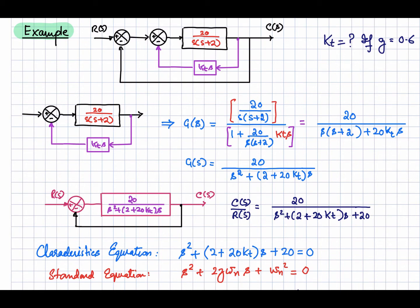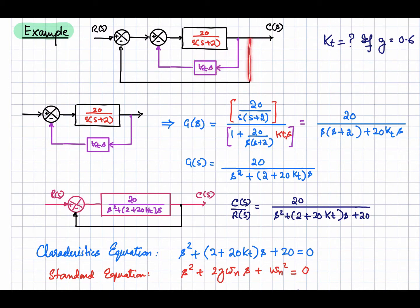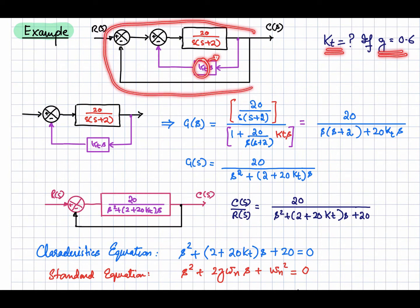Now let's look at this example. Here you can see one feedback loop, and in the feedback loop we have this derivative action kt times s, so it is going to act as a controller. We have another feedback loop as well. We want to find out the value of kt, the controller constant, if the overall damping factor zeta of this system is equal to 0.6.